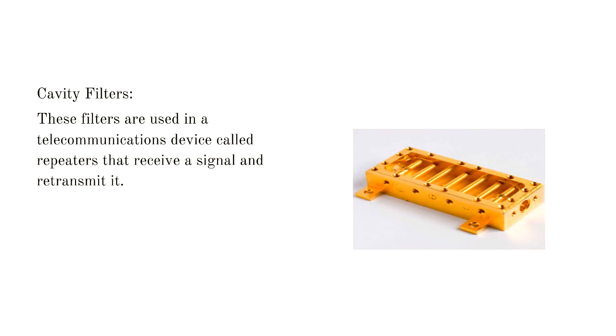Cavity filters allow the desired band of frequency to pass through and reject the unwanted band of frequency. These filters are used in a telecommunications device called repeaters, which receive a signal and retransmit it. Repeaters are used to extend transmissions so that the signal can cover longer distances or be received on the other side of an obstruction.